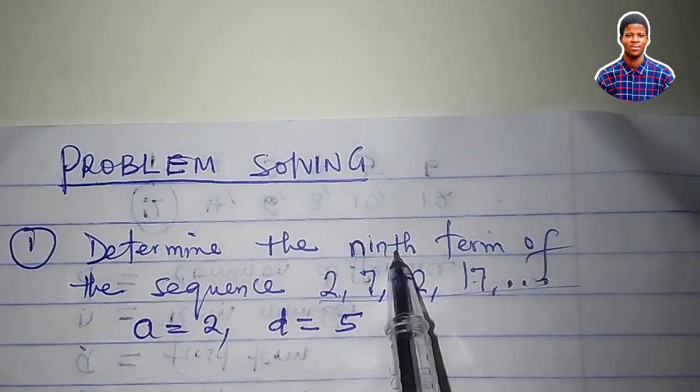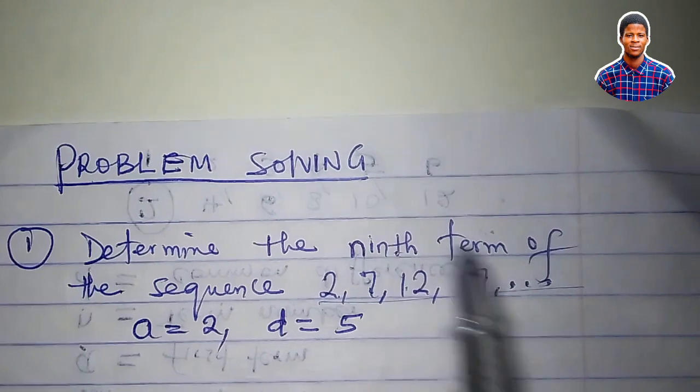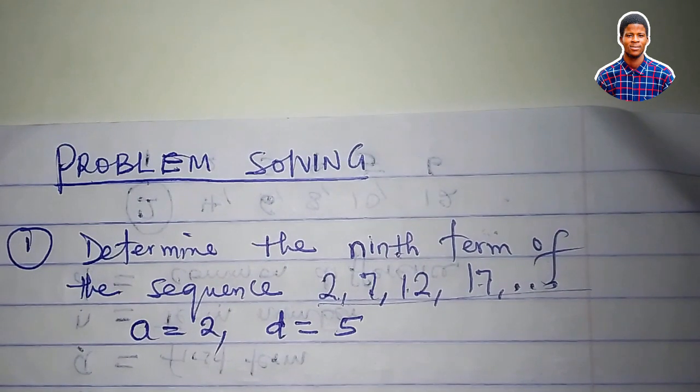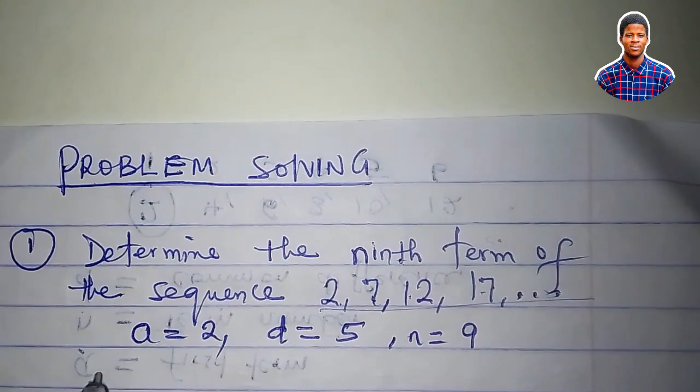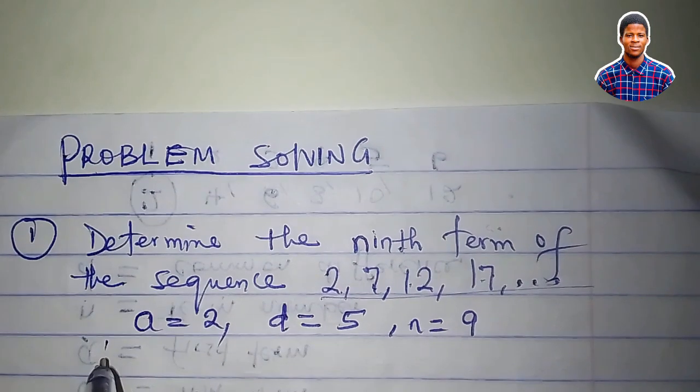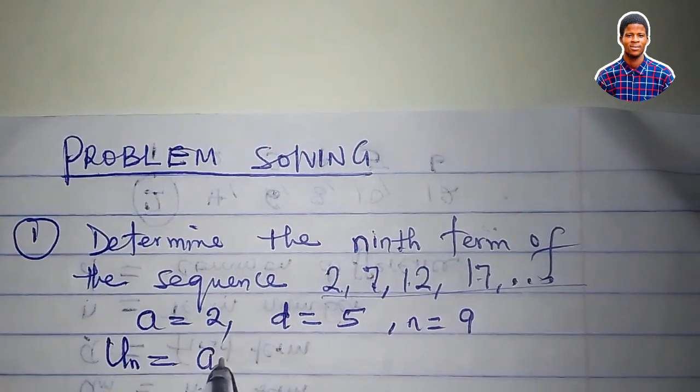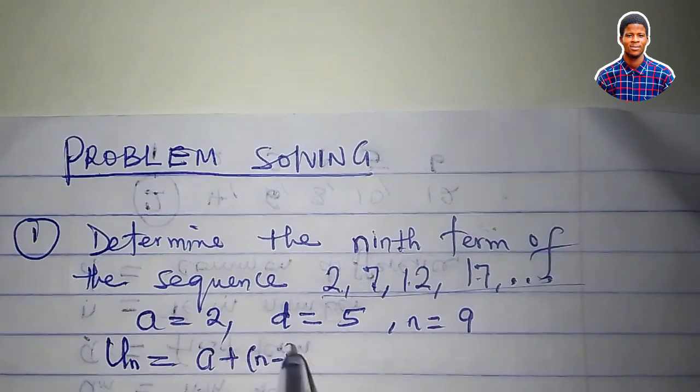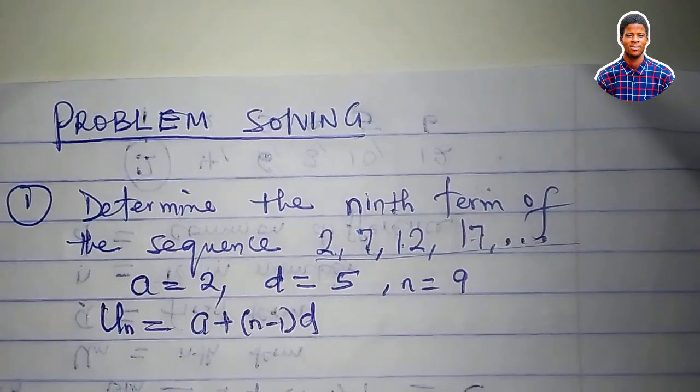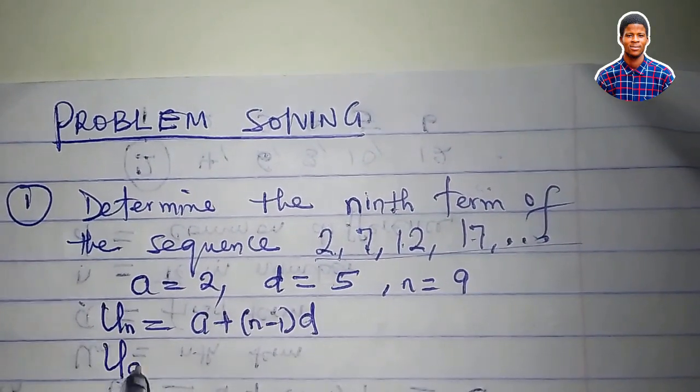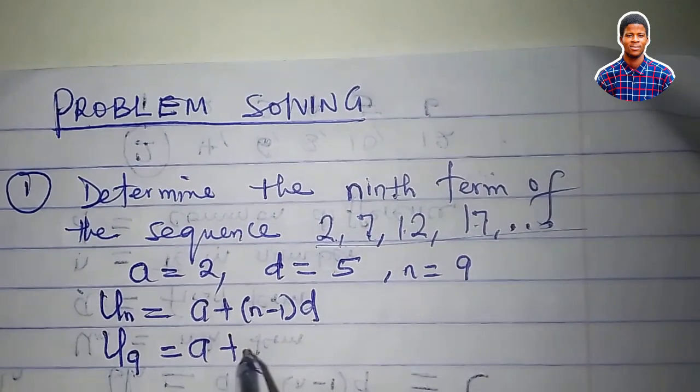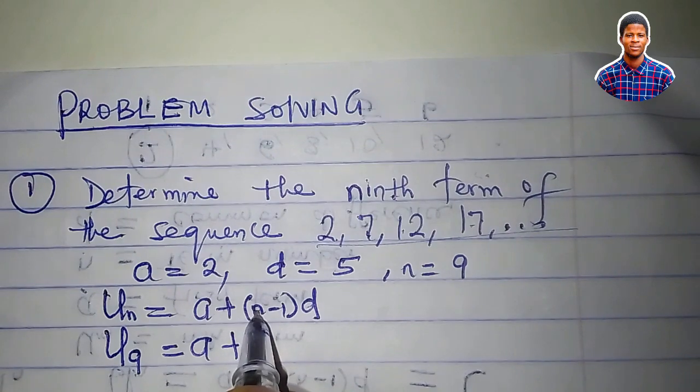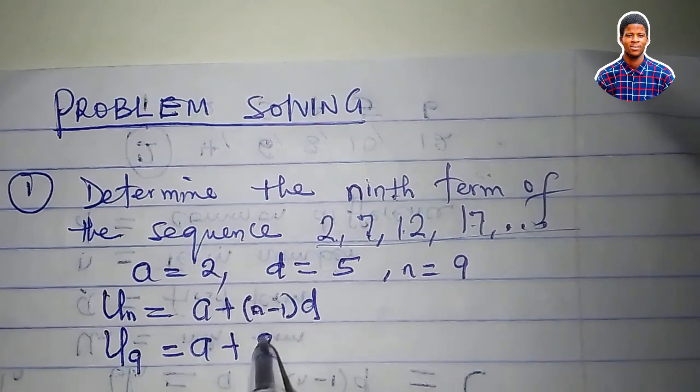The ninth term is what I want to look for. It means that the term number of that ninth term is nine. n equals nine. So the nth term formula says u sub n equals a plus (n minus one) times d. The ninth term, which is u sub 9, equals a plus nine. Nine minus one is eight. Eight d.